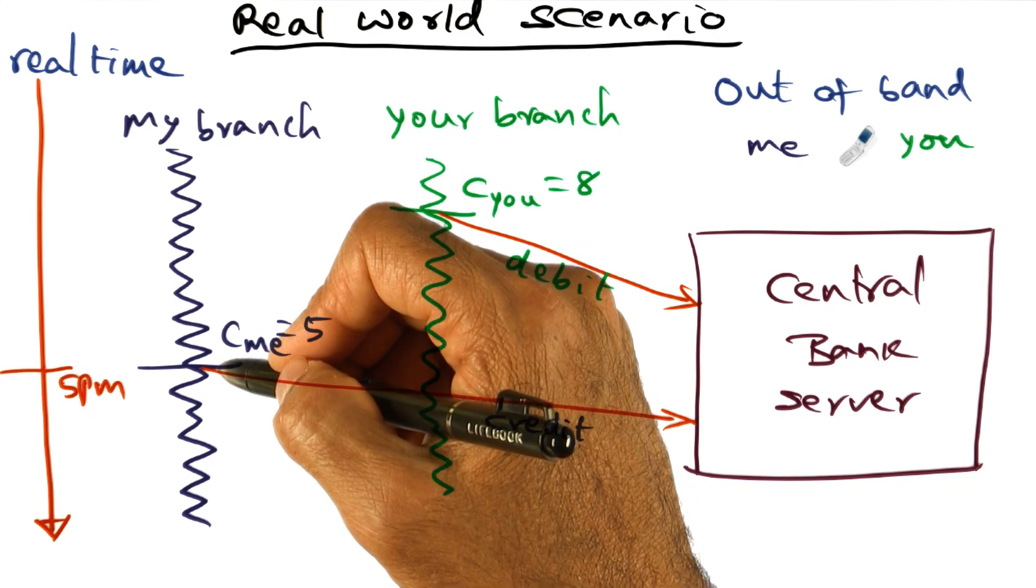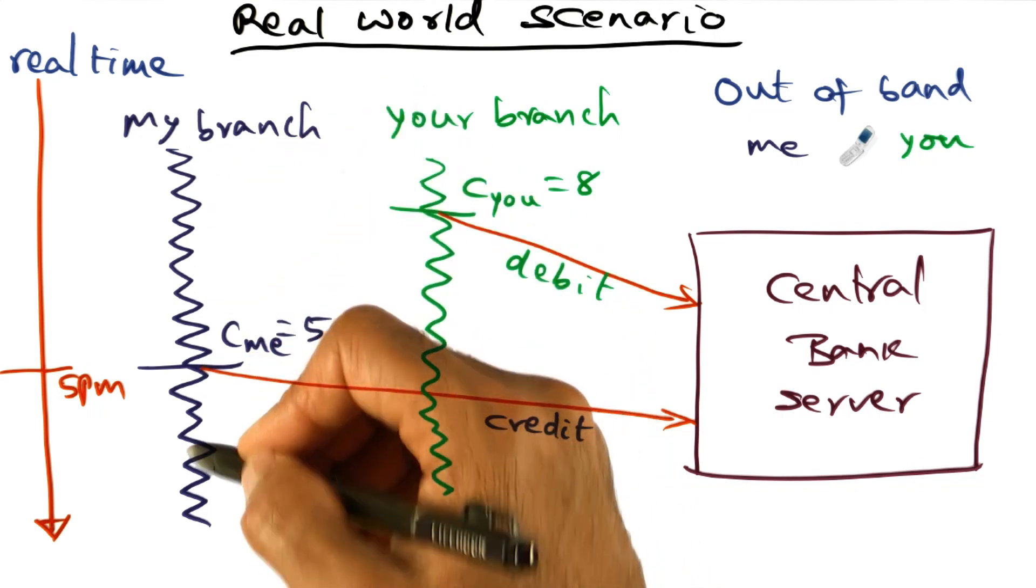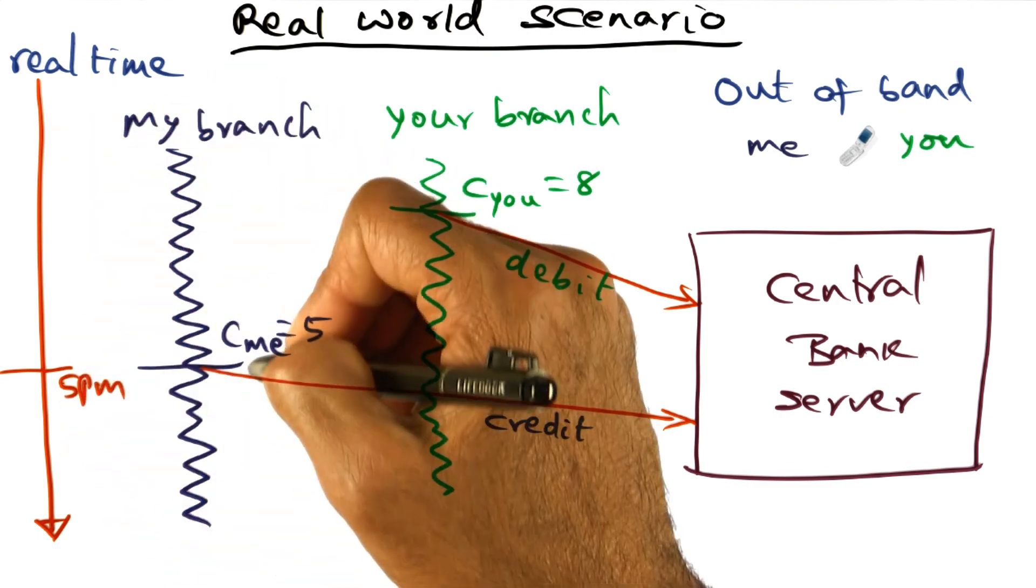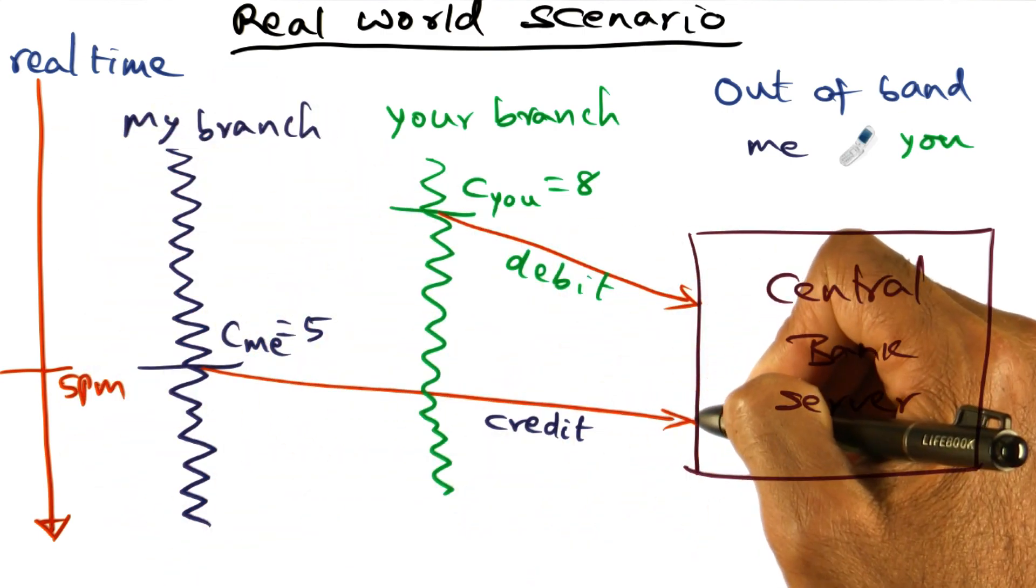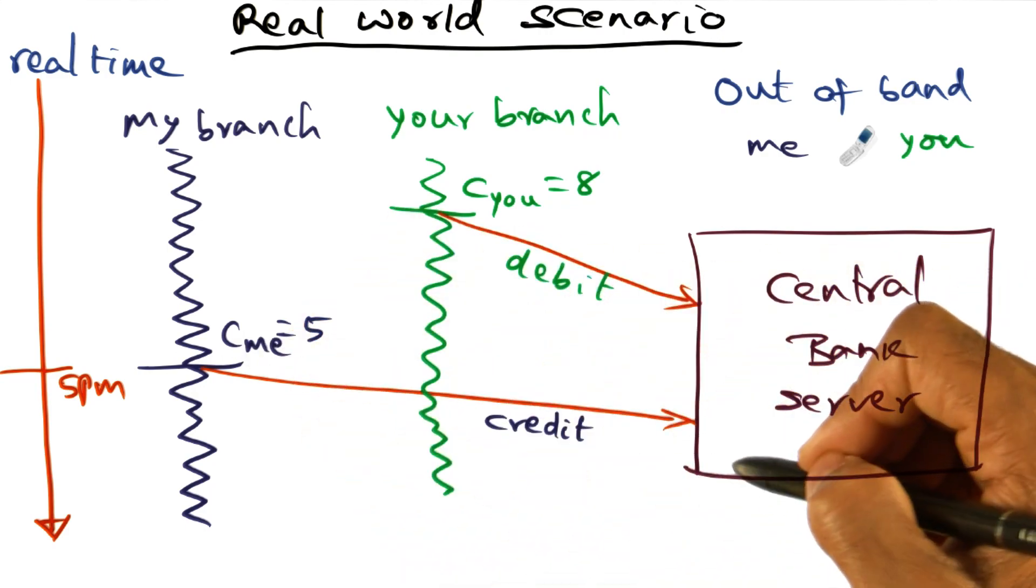And so I am exactly at 5 p.m., keeping my word exactly at 5 p.m. My branch happens to be good with the time. It's in sync with the real time. And so at 5 p.m., I've done the credit of the amount that I owe you to my central bank server.